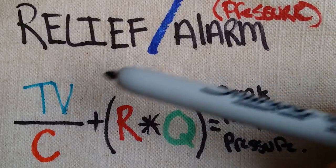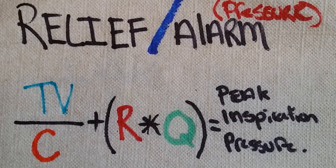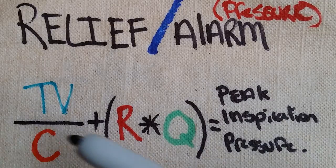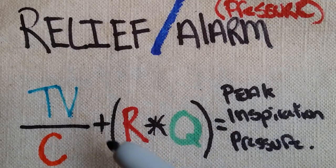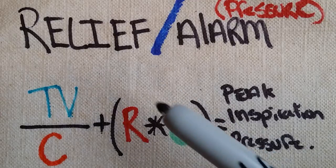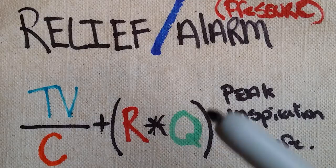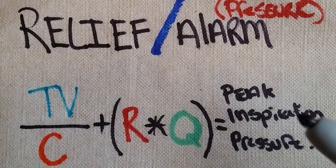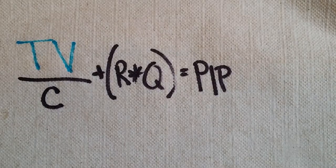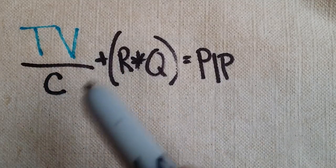The first one, tidal volume. TV, whenever you see it, doesn't mean television, it means tidal volume, the amount of air that actually goes into your lungs. That's going to be over compliance of the lungs and thorax. Plus R, which is resistance of the airway, times flow.